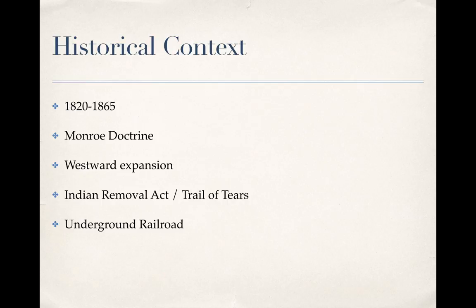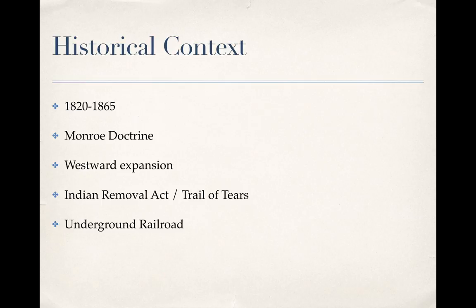Slavery is in full force, so we have the establishment of the Underground Railroad. In this unit, we are going to read Uncle Tom's Cabin by Harriet Beecher Stowe and Frederick Douglass, so we will learn more about what all that meant — slaves trying to escape the South and make their way North — all leading up to the Civil War.